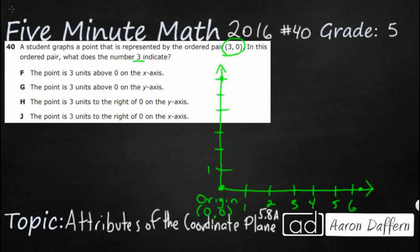And we'll see if we can figure out what this 3, 0 means and then which answer is correct. So, we have our origin. That's where the x and the y-axis meet. But we still need to label our x-axis and our y-axis.